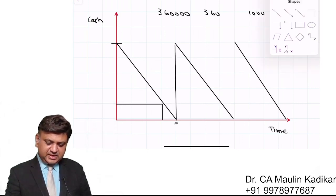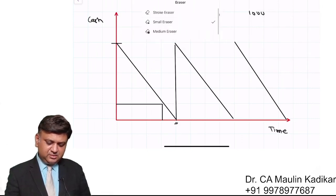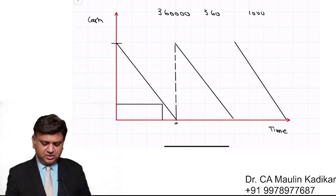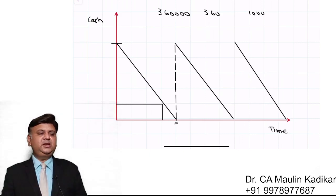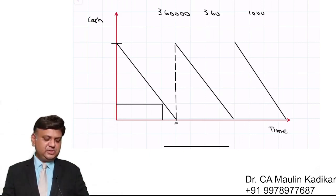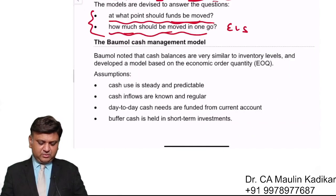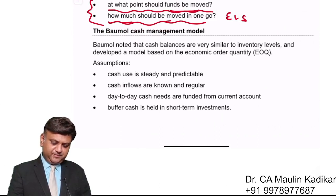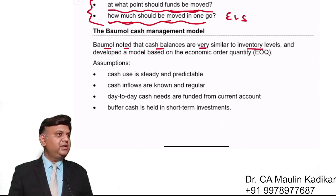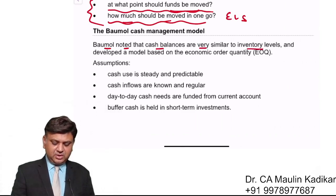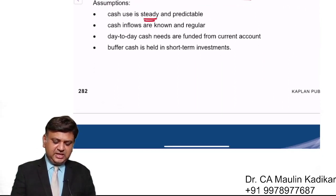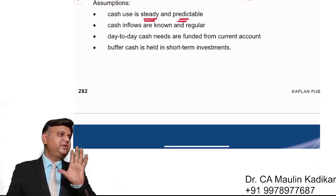So we understand that this is similar to inventory with a reorder level. Just as there is a reorder level in inventory management, similarly for Baumol's model the calculation is quite easy. For the Miller-Orr model it is slightly more involved to understand. Next: Baumol's model of cash management. Baumol noted that cash balances are very similar to inventory levels.